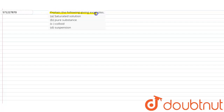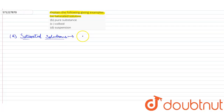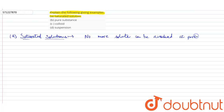Hello students. The question is asking us to explain the following with examples. The first one is saturated solution. Saturated solutions are solutions in which no more solute can be dissolved at a particular temperature. Keep this in mind.